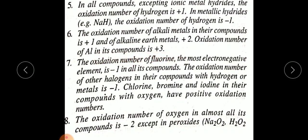Rule 7: The oxidation number of fluorine, the most electronegative element, is minus one in all its compounds. Since fluorine is the most electronegative element, it always has a negative oxidation number.